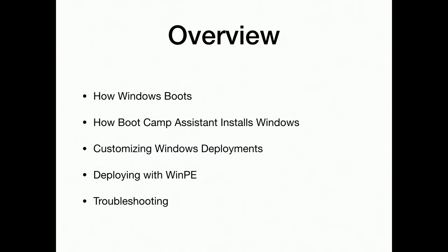When you escalate any issues with Bootcamp, anyone that does dual boot will know they escalate issues to Apple, and Apple will say the only supported way to install Windows on your Mac is through Bootcamp Assistant. Understanding what Bootcamp Assistant does and making sure you do stuff similar to that is important, because that's really the way Apple engineers it to work. We want to do things exactly that same way without double-clicking through the UI — because who wants to install Windows manually on 5,000 machines? And then there are three different ways we're going to talk about to customize Windows deployment.